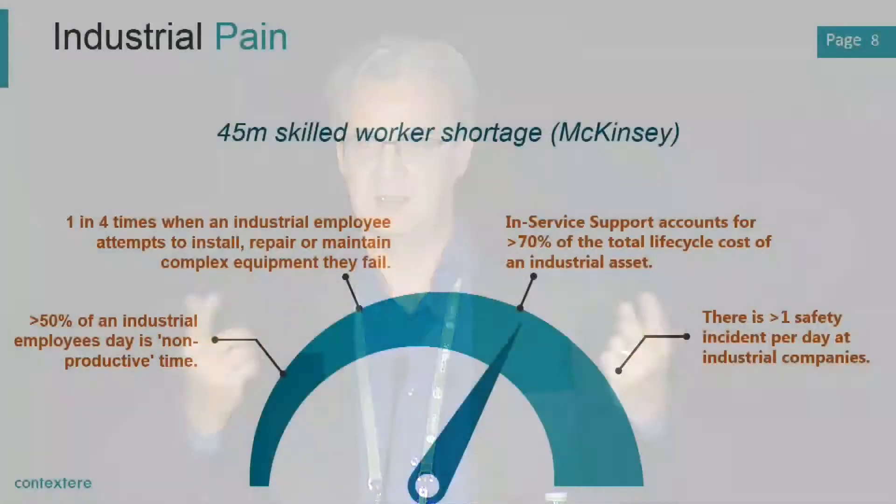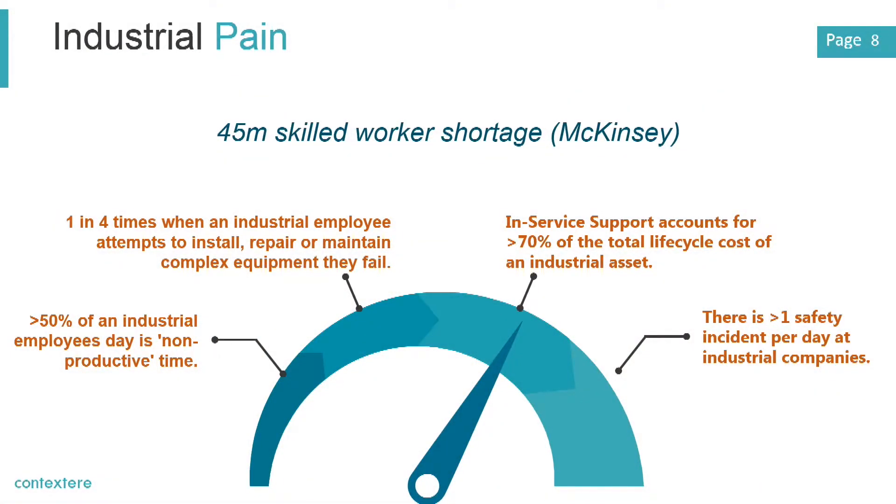In addition to not having the right information, we just don't have enough people in the workforce. There's currently a 45 million skilled worker shortage. At the same time, we've got 300 million youth unemployed or undereducated and not in the workforce. A huge disconnect that we need to find ways to fix, as a society, both locally and globally.